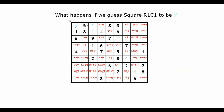We remove 4 from its row, from its column, from its box. Then we remove 3 from its row. Now we have another square that can be finalized to be 2. We remove 2 from its row, from its column, and from its box.